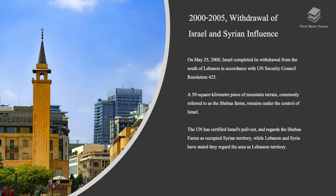Between 2000 and 2005, there was a withdrawal of Israeli and Syrian influence. On May 25th, Israel completed its withdrawal from the south of Lebanon in accordance with UN Security Council Resolution 425. A 50 square kilometer piece of mountain terrain, commonly referred to as the Sheba Farms, remains under the control of Israel. The UN certified Israel's pullout and regards the Sheba Farms as occupied Syrian territory, while Lebanon and Syria regard the area as Lebanese territory.